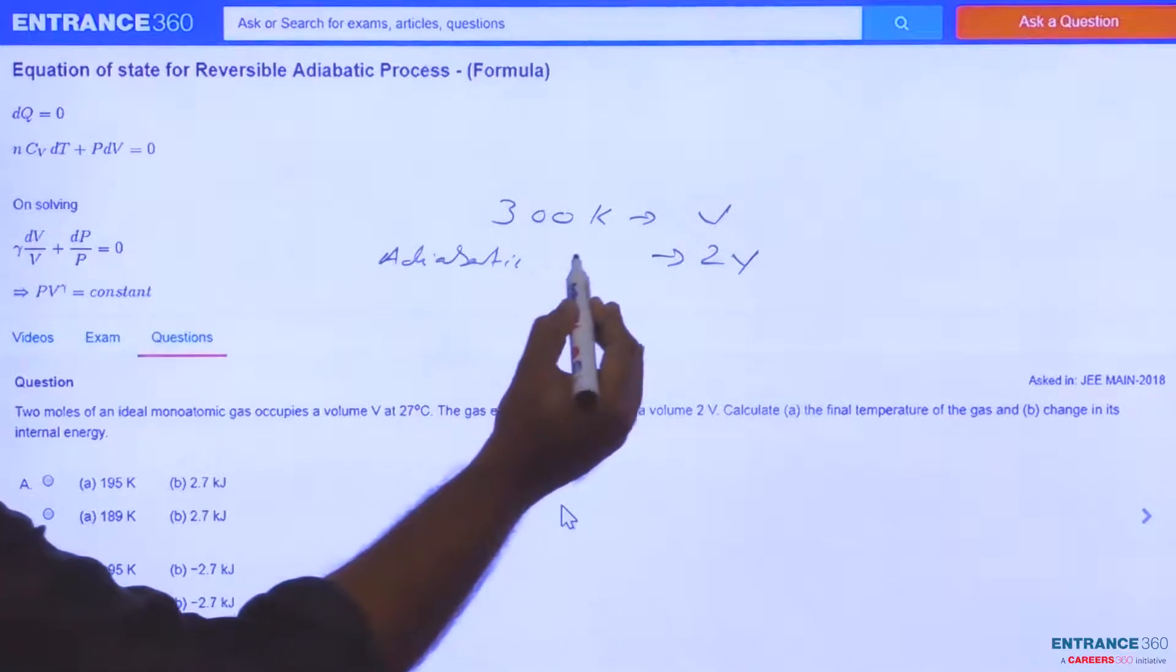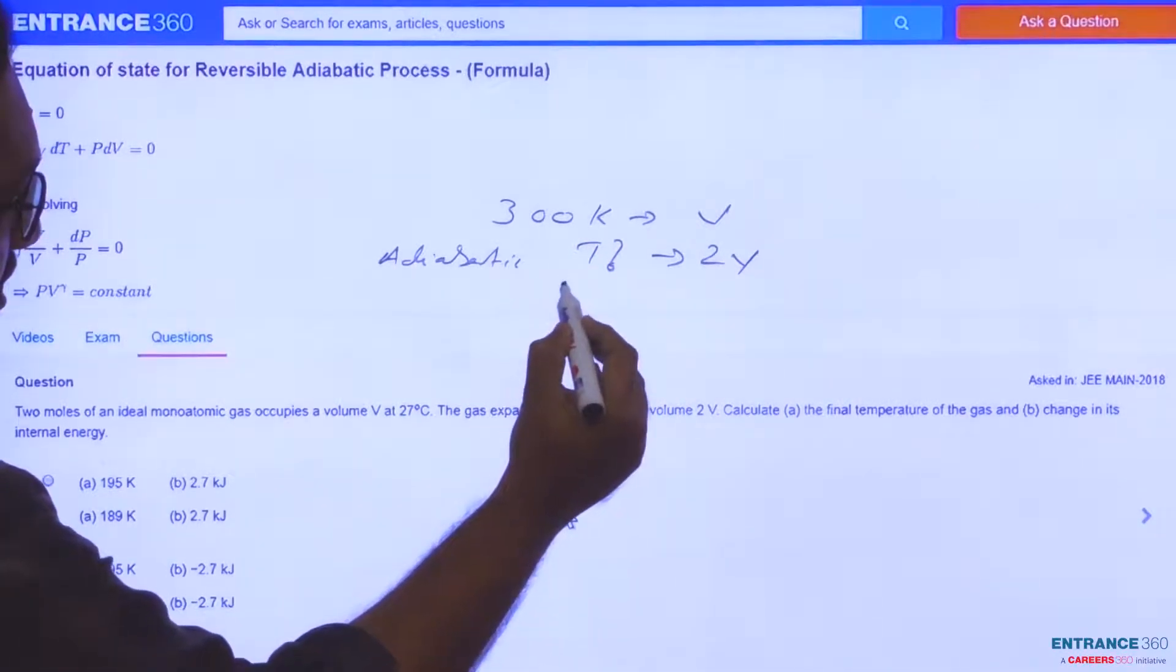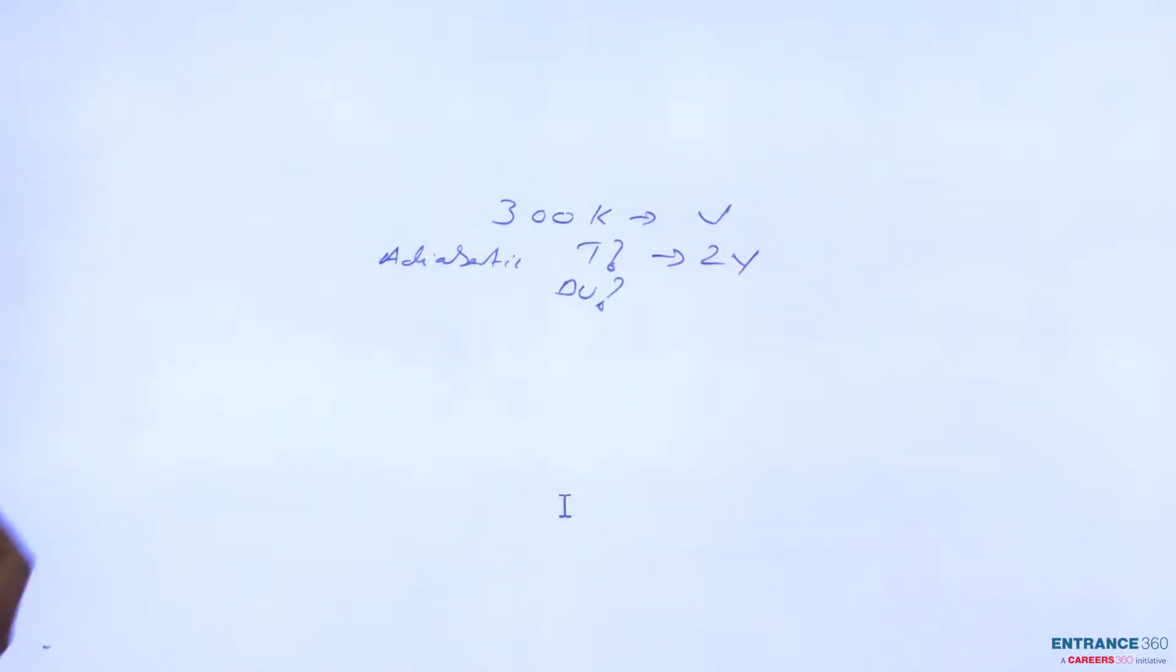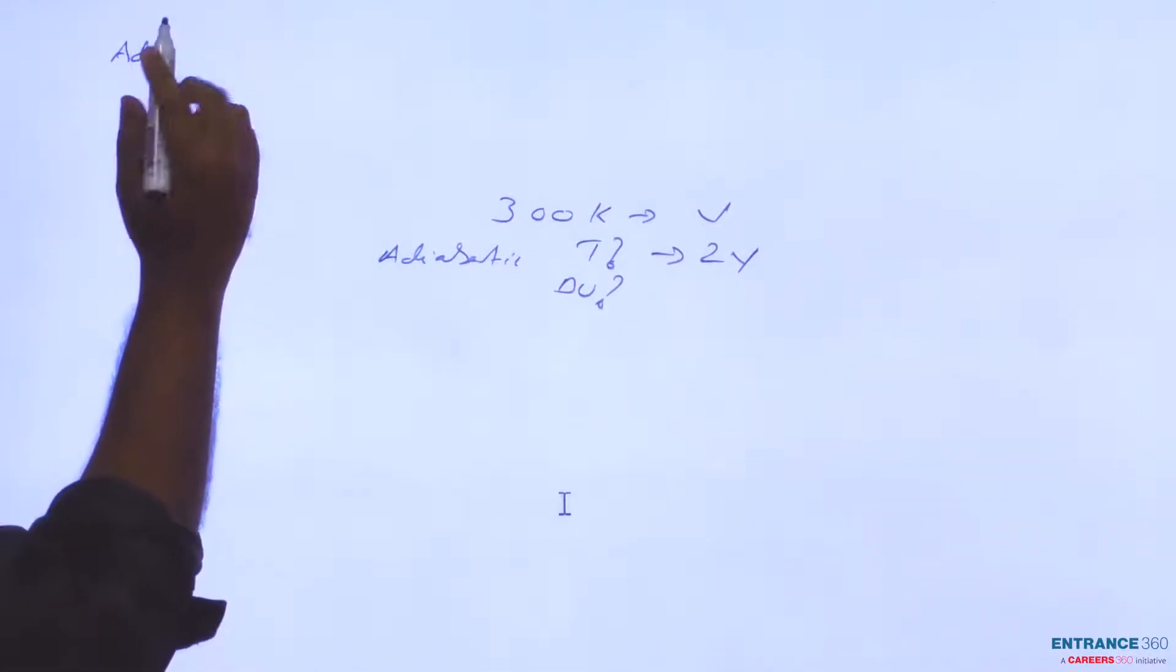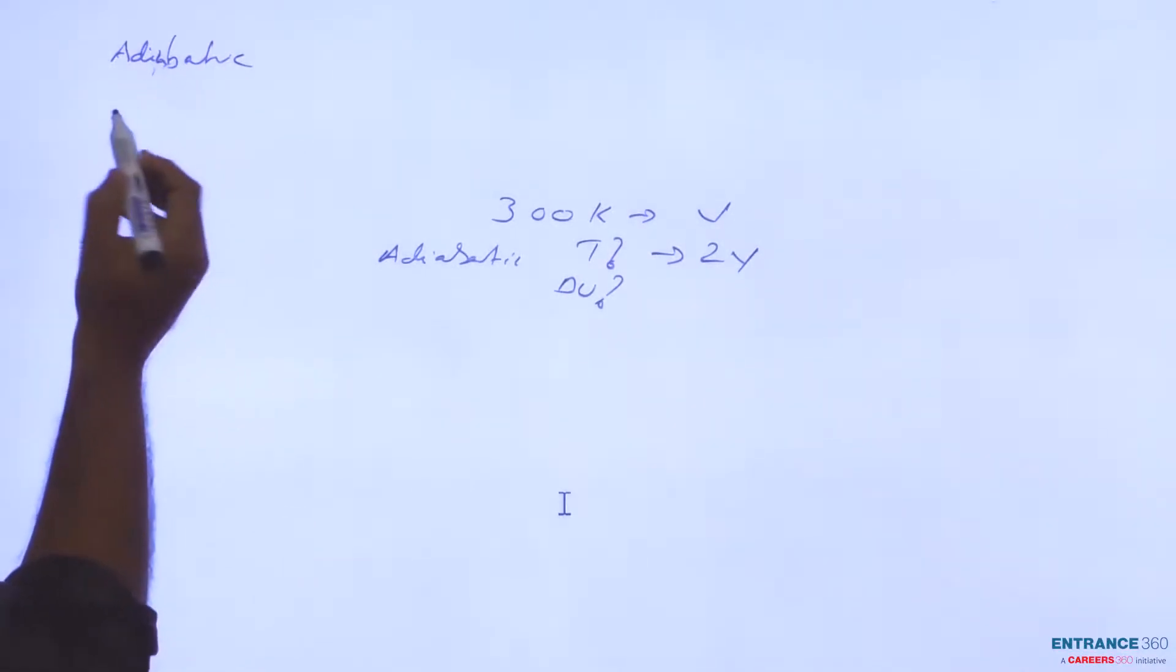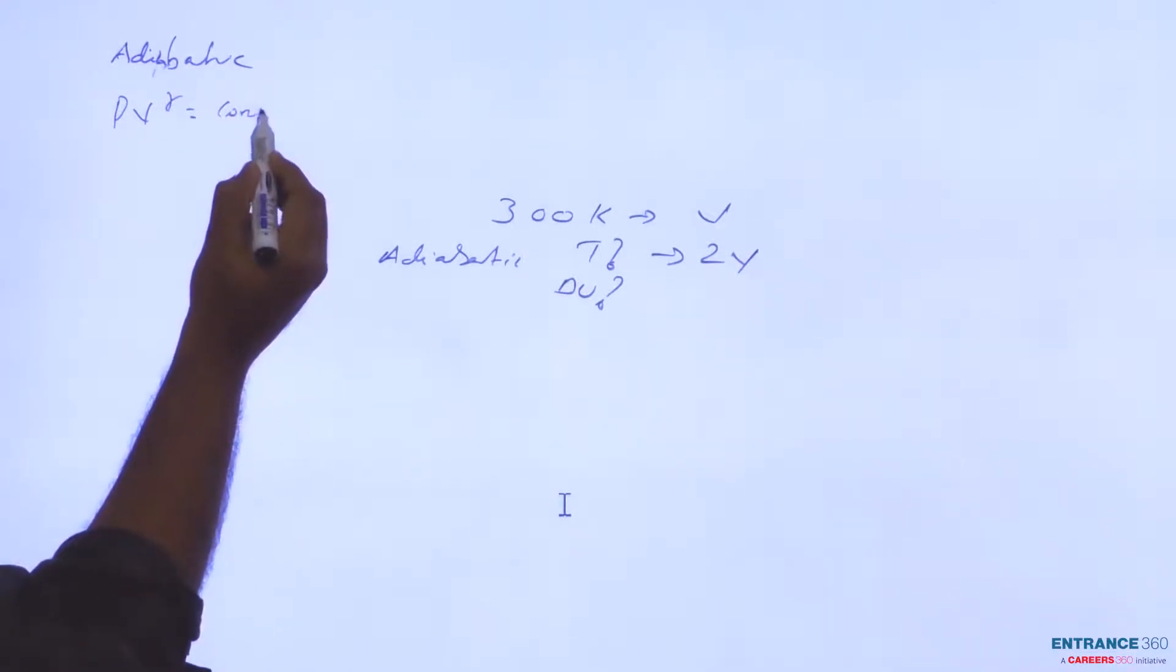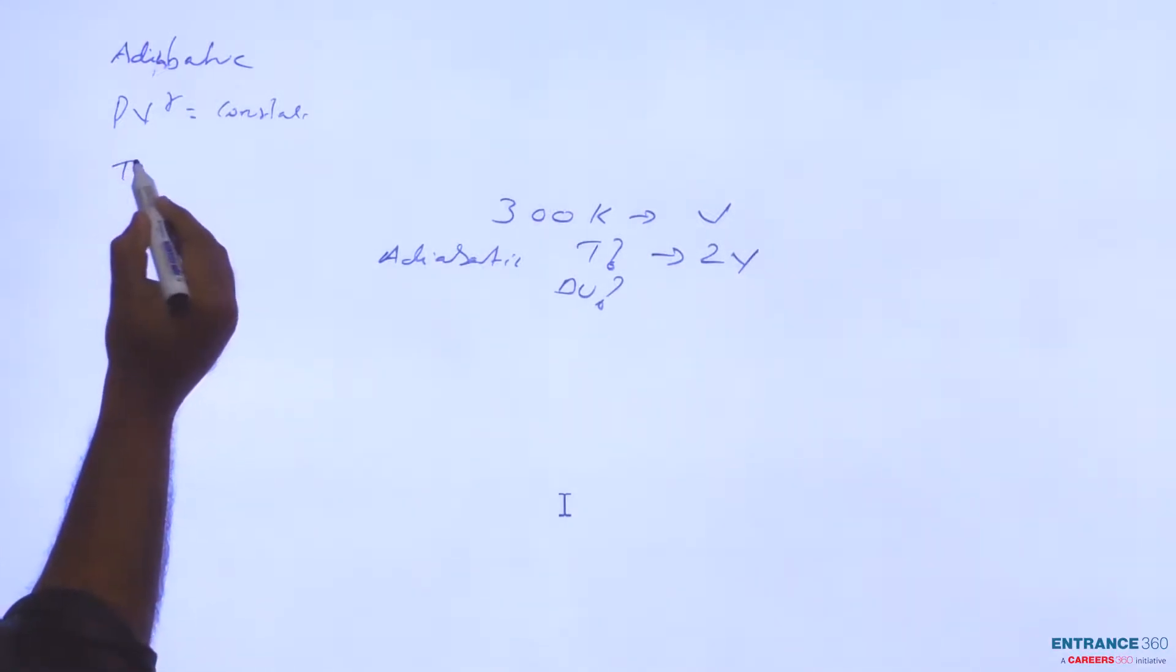So what is the final temperature and change in internal energy? As the process is adiabatic, PV^γ equals a constant for an adiabatic process.